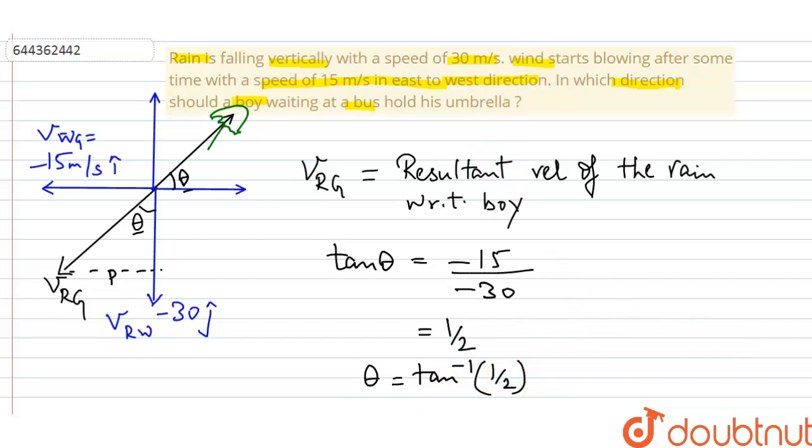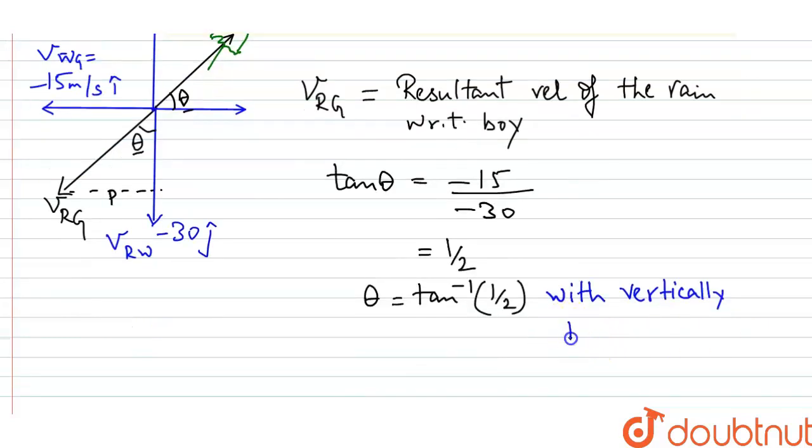So I can write here that at this angle, the boy should hold his umbrella, this angle with half. So this is the theta that equals tan inverse half.